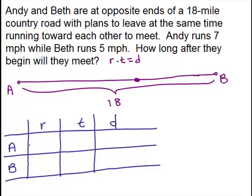Are their rates given? Andy runs 7 miles per hour, so yes, his is given and it's 7. Beth runs 5 miles per hour, so that number is given as well.